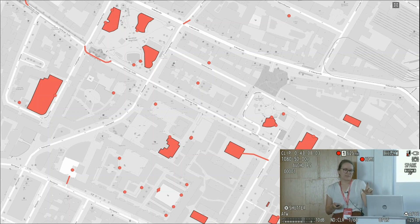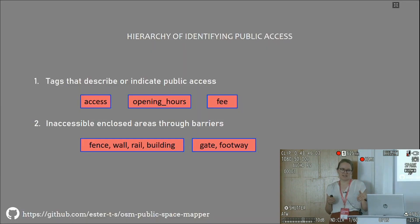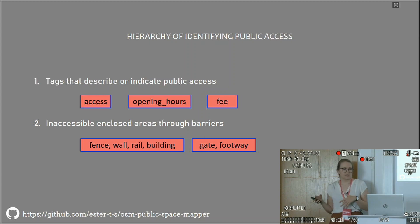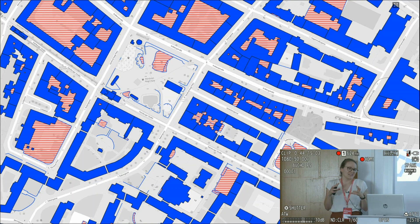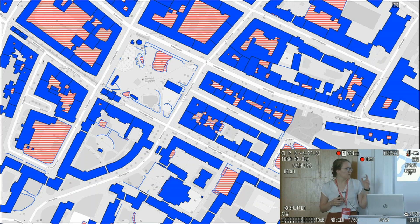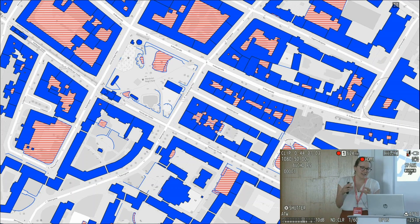For elements where I couldn't identify access from the first layer, I move to the second layer: inaccessible enclosed areas defined through barriers. I look at barriers like fences, walls, rails, and buildings, and also at entrances through those barriers — gates, footways, crossings. Combining these, I get the inaccessible enclosed areas. The buildings — with building passages cut out — and barriers like fences and walls are shown in blue, and everything within those barriers in red hatching represents the inaccessible enclosed areas.